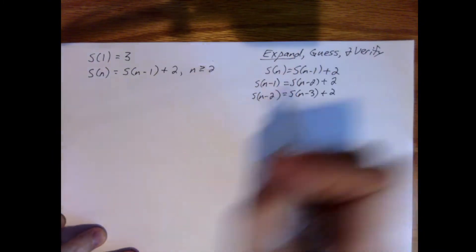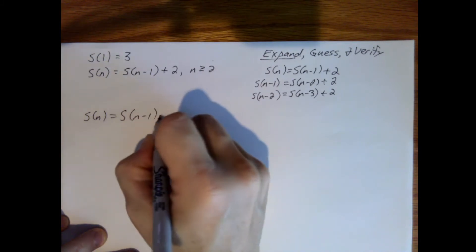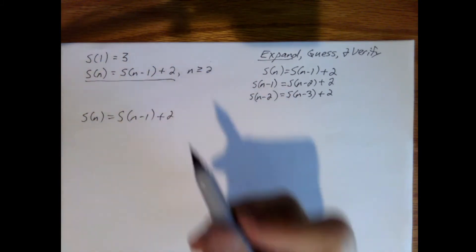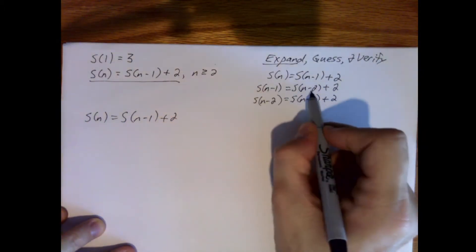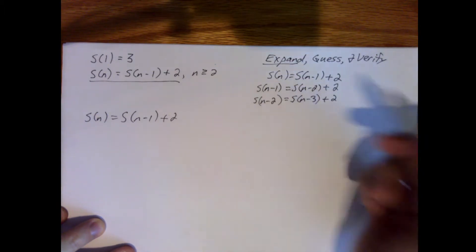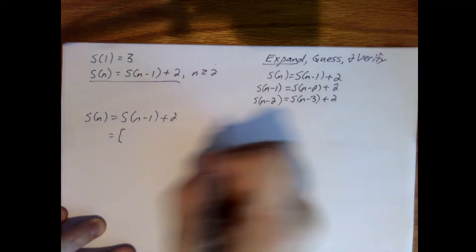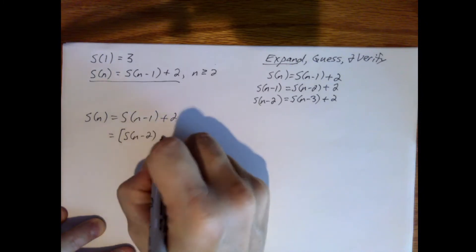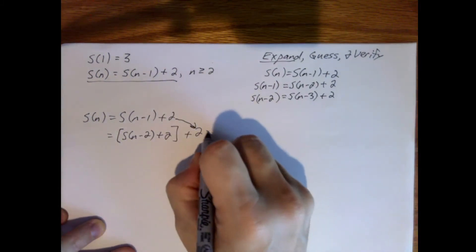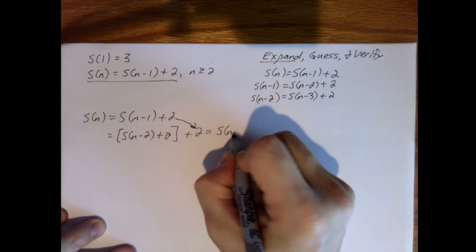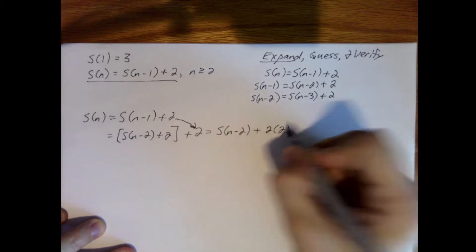So first we're going to do the expand step. We have s of n is equal to s of n minus 1 plus 2 — that's what we were given. Now we're going to replace s of n minus 1 by the right-hand side. Using square brackets to make it clear what I'm inserting: s of n minus 1 is equal to s of n minus 2 plus 2, plus our original 2. This simplifies to s of n minus 2 plus 2 times 2.